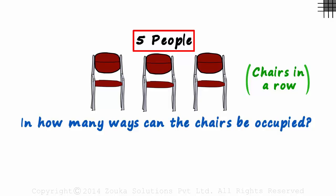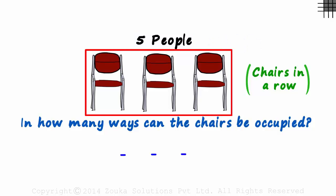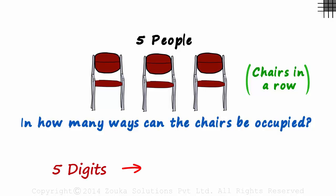Five people is analogous to five different digits, and three chairs are analogous to the three slots for the three digit number we had to form. Correct? If you remember, we were given five digits and asked for the number of three digit numbers we can form.